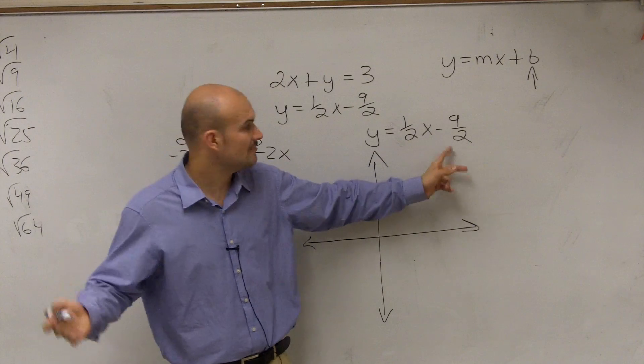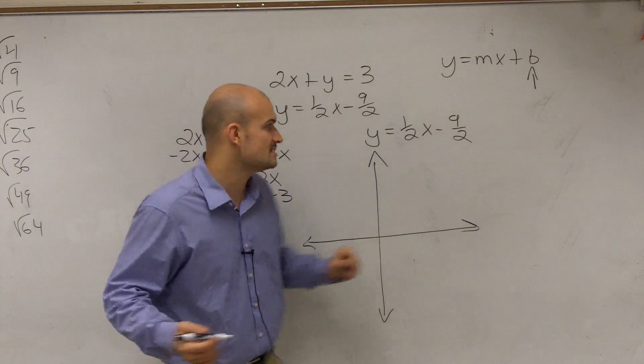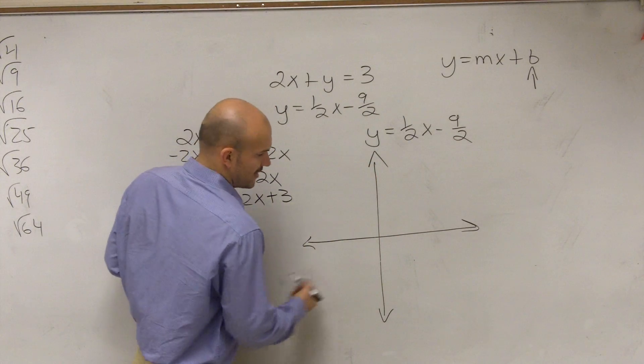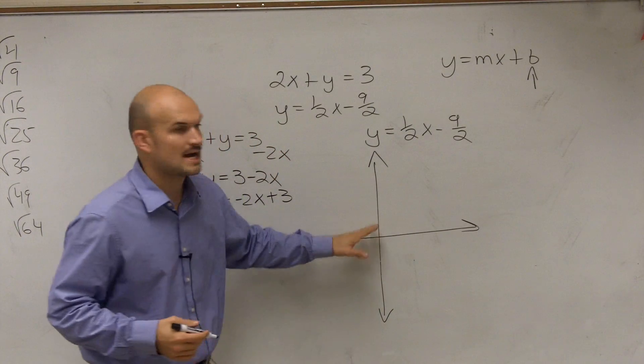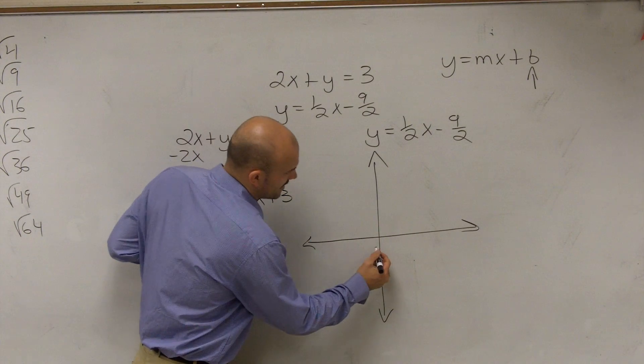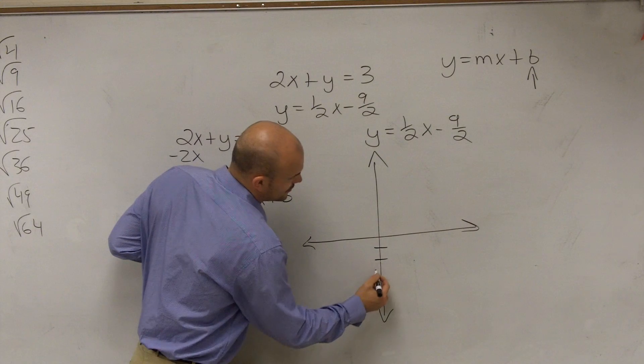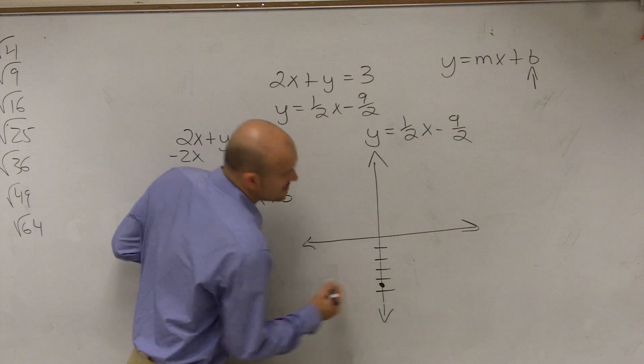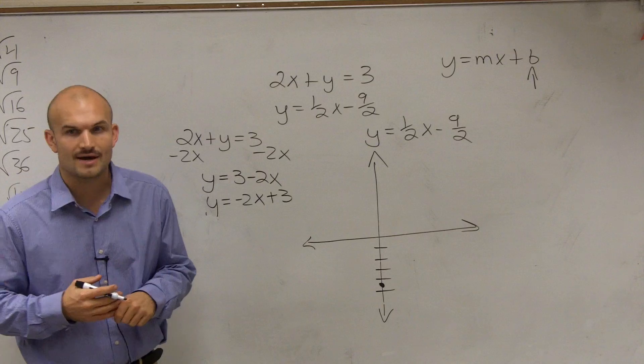What is this in decimal form? Does anybody know? Yeah, 4.5. 9 divided by 2 is negative, or negative 9 divided by 2 is negative 4.5. So what I'm going to do is I'm going to go down to negative 4.5 and I'm going to graph that. 1, 2, 3, 4, 5. So I'm going to make a dot between negative 4 and negative 5.